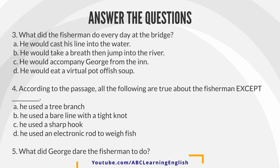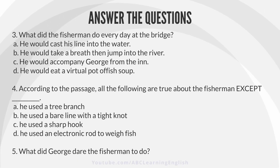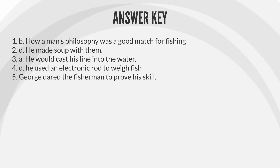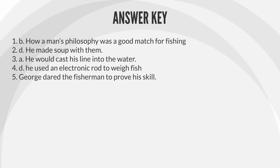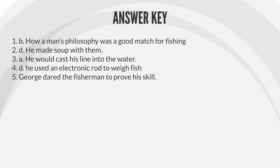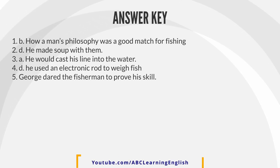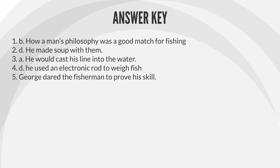Question 5: What did George dare the fisherman to do? Answer key: 1. B — How a man's philosophy was a good match for fishing. 2. D — He made soup with them. 3. A — He would cast his line into the water. 4. D — He used an electronic rod to weigh fish. 5. George dared the fisherman to prove his skill.